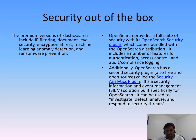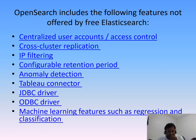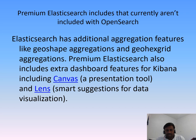For support, Elasticsearch only provides such support for premium customers, whereas with OpenSearch you can get help from partner pages and AWS provides 24/7 support. OpenSearch features not offered by Elasticsearch include: centralized user accounts and access control, closed cluster replication, IP filtering, anomaly detection, JDBC/ODBC driver, and machine learning features — all free.